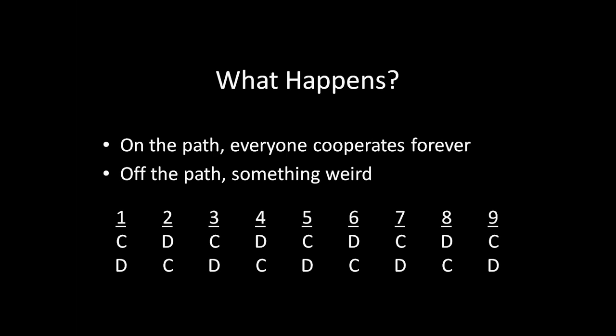If we were curious about whether this is an equilibrium, we have to answer a couple of different questions. We have to look at both on the path of play and off the path of play to see if there are any profitable deviations. We're only going to be looking at on the path of play right now. We're not going to be looking at off the path of play. And I'll talk about why that's the case in the moment. So let's first figure out whether on the path of play, anyone would want to deviate from this.